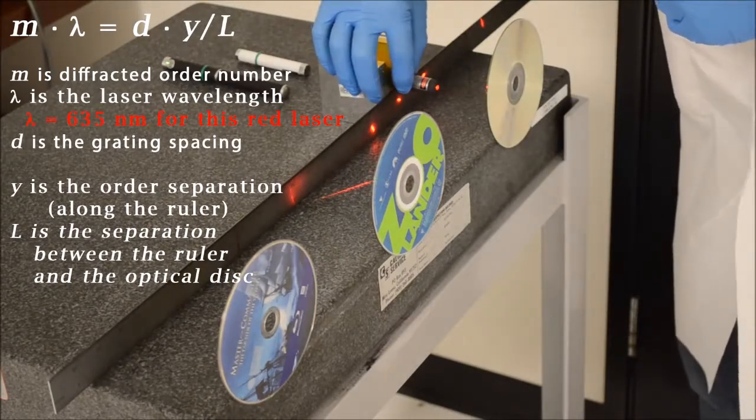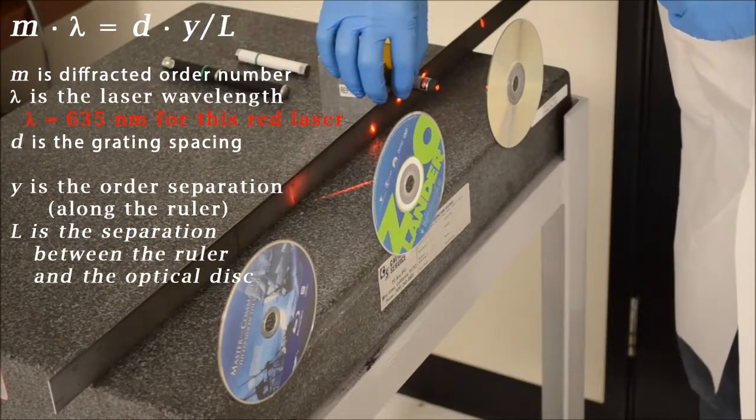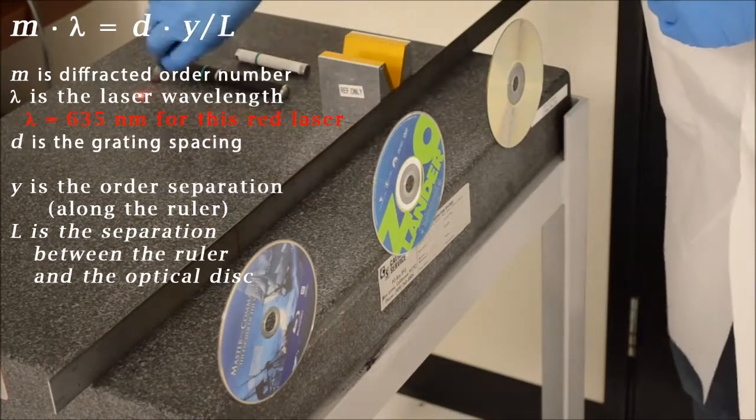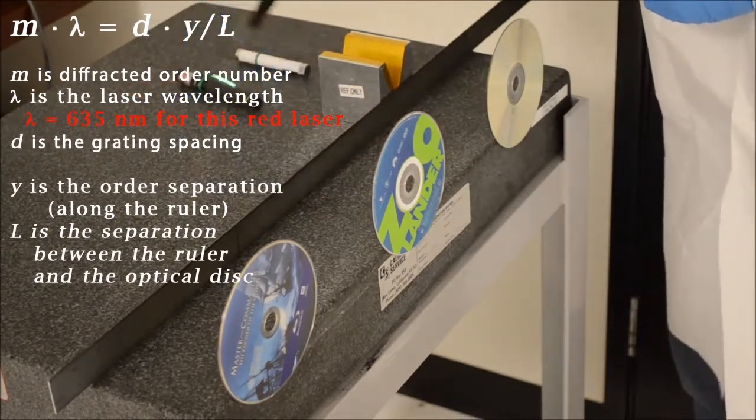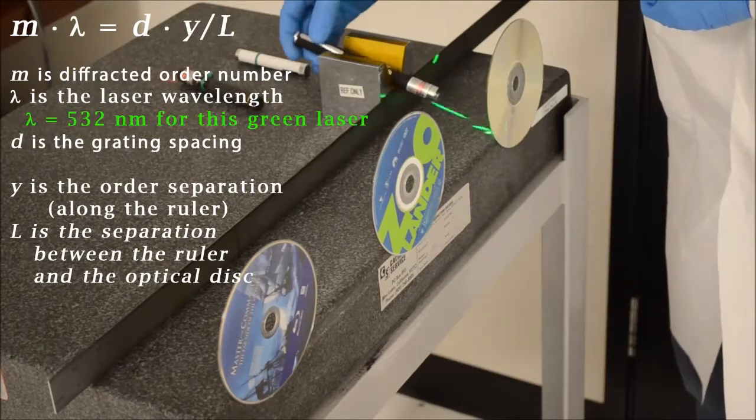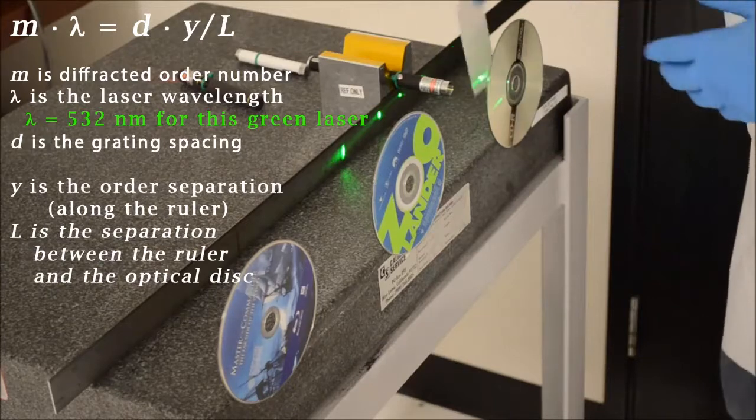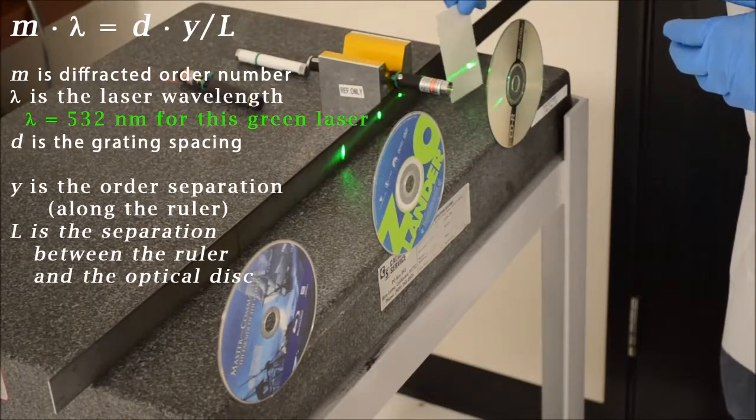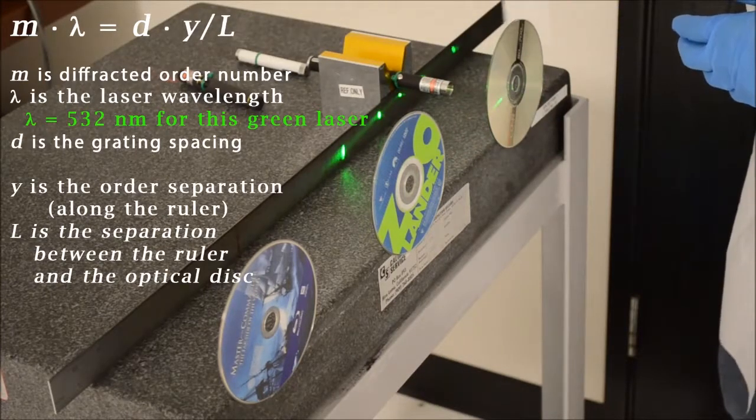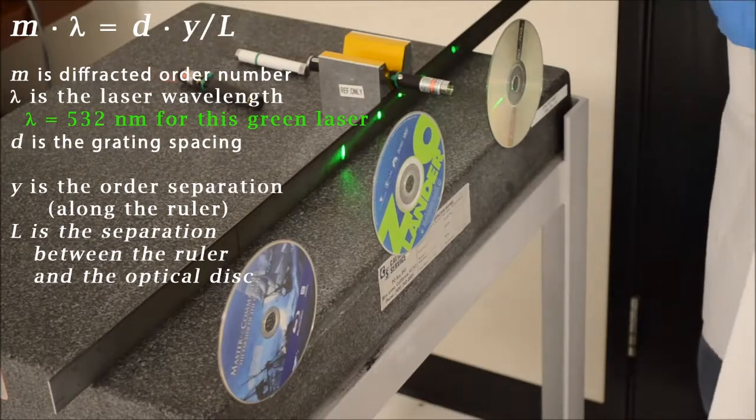Here's the diffraction from the red laser at about 635 nanometers. Here's a green laser at 532 nanometers. And you'll notice the diffracted orders once this is aligned are much more closely spaced than the red laser because the green is a different wavelength.